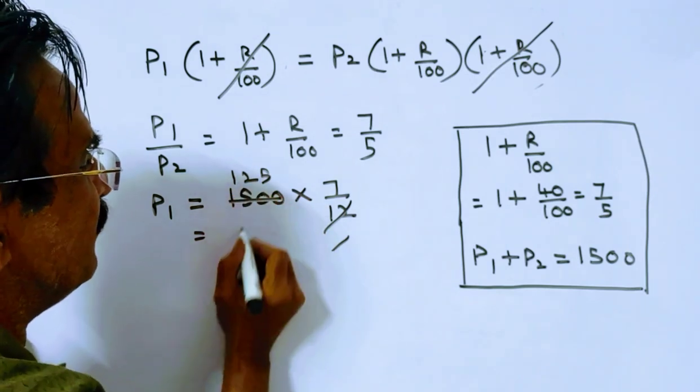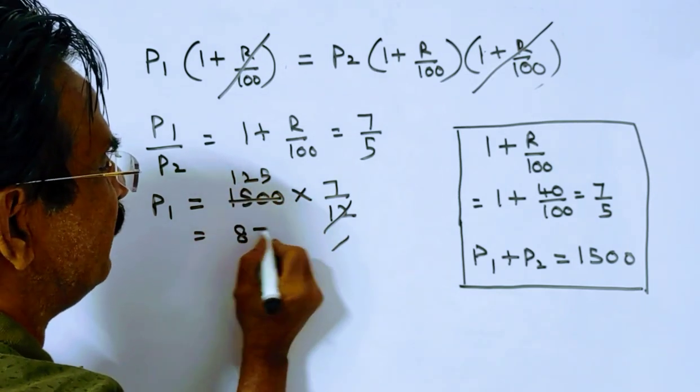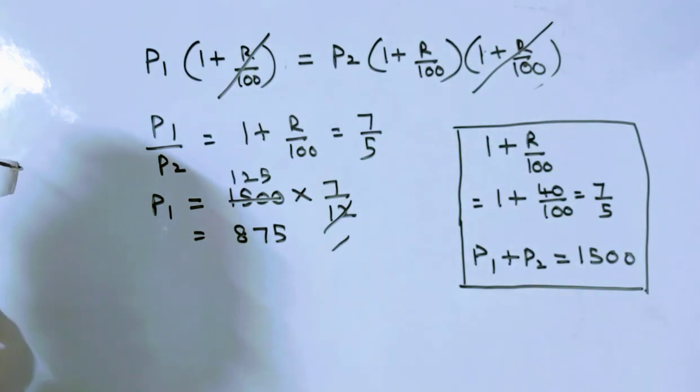So 8, 700, 725, 125, 175. So P1 is equal to 875.